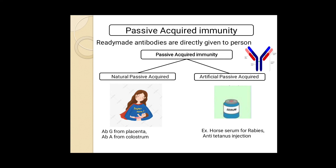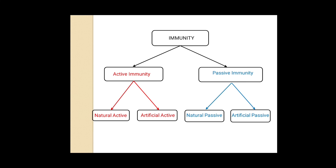Natural passive immunity is due to our mother. Now, artificial passive acquired immunity refers to receiving ready-made antibodies from other animals. If we are getting ready-made antibodies from another animal, that immunity is called artificial passive acquired immunity. Examples include horse serum used for rabbits and antitetanus injections used for tetanus. This is how all types of immunity are completed.